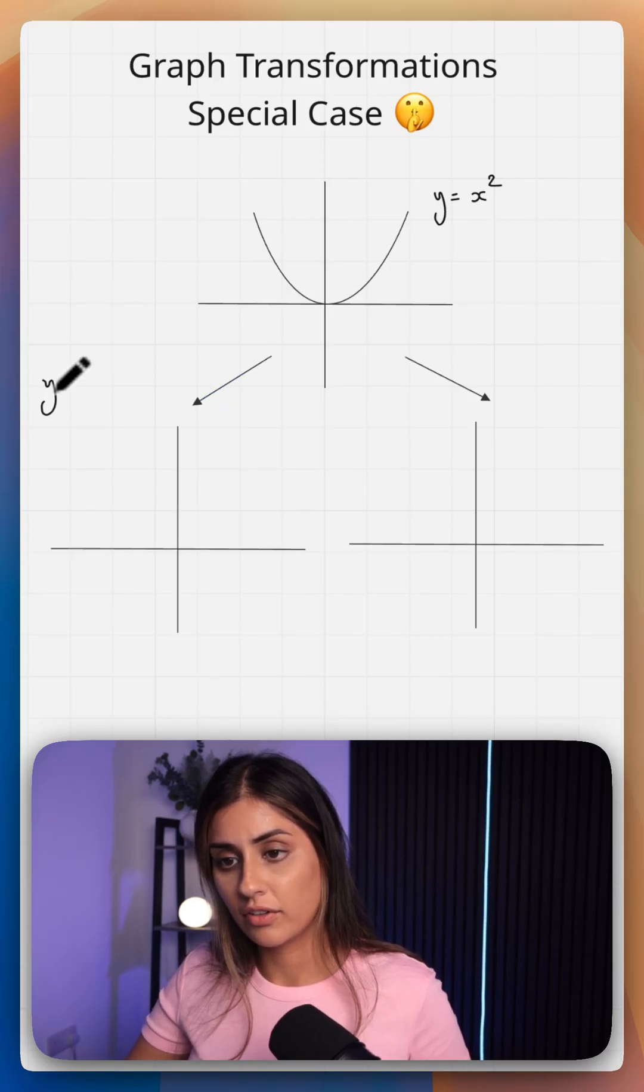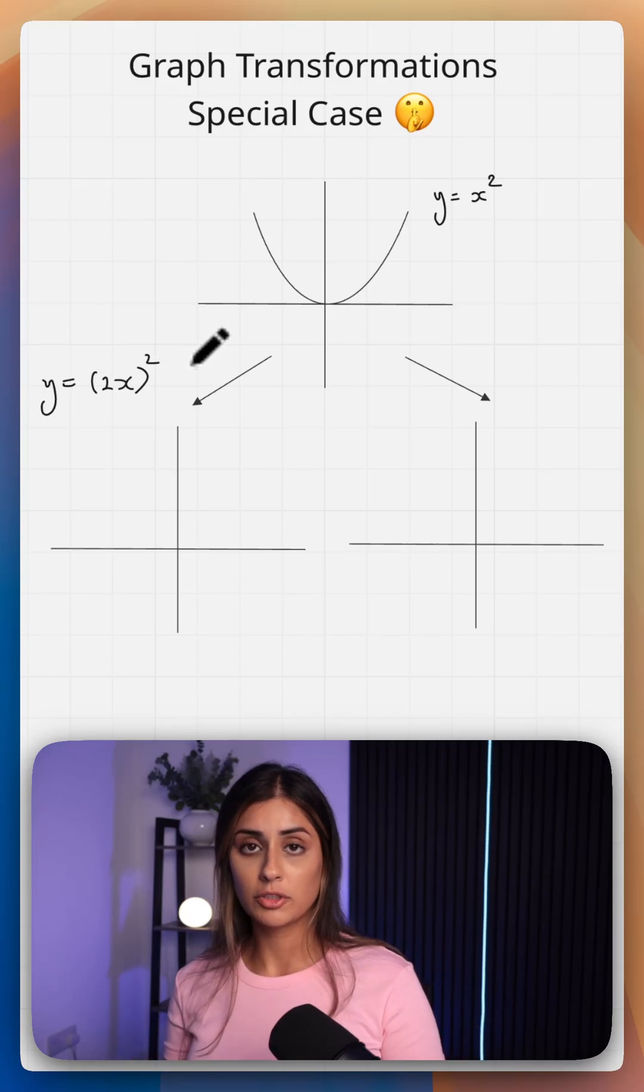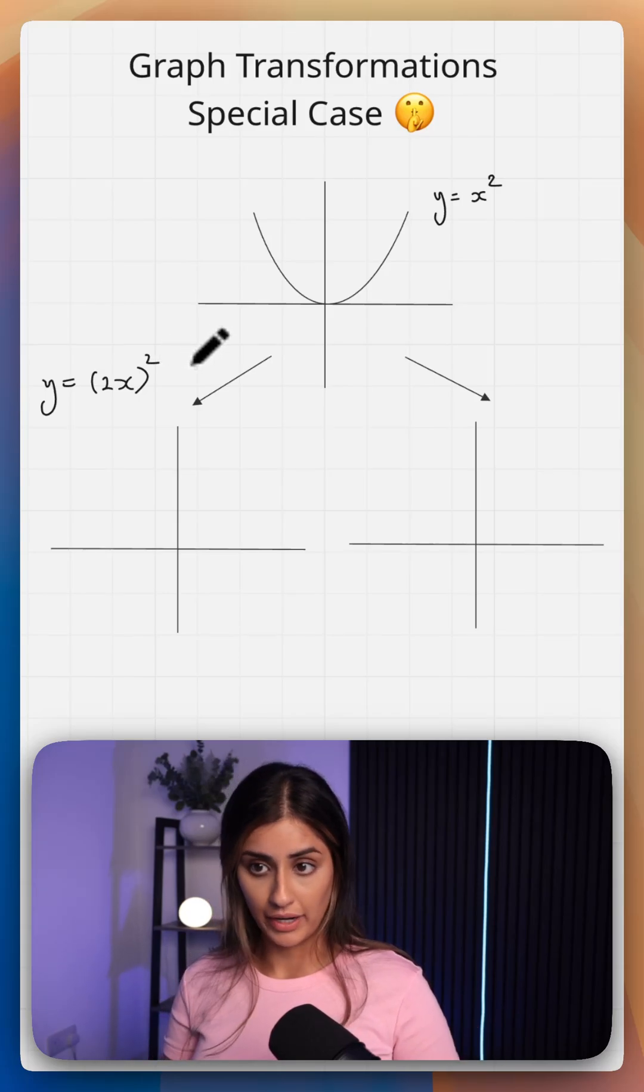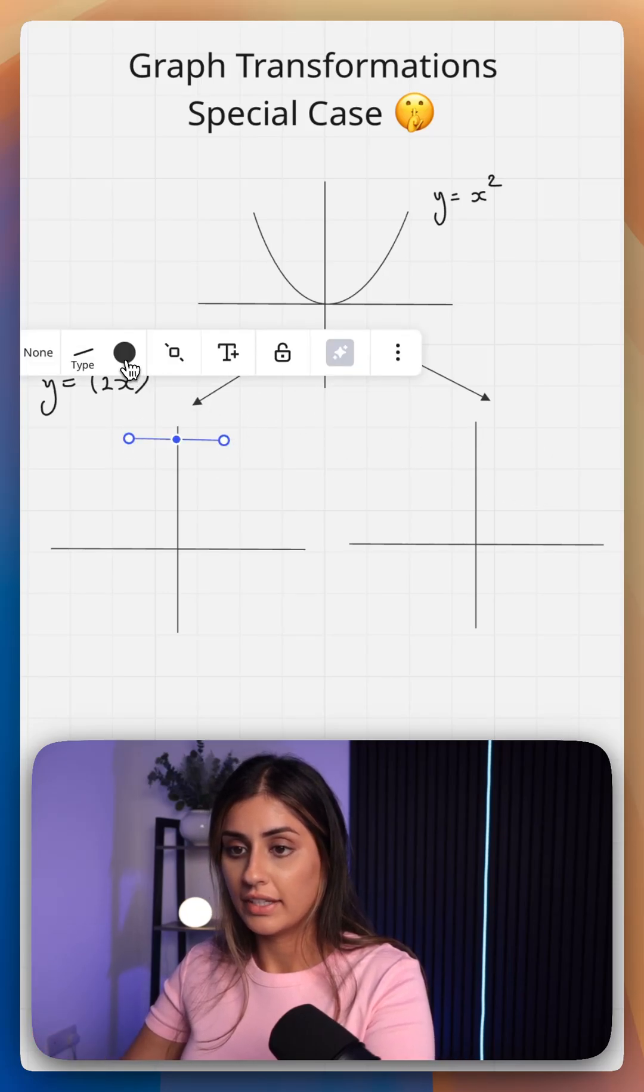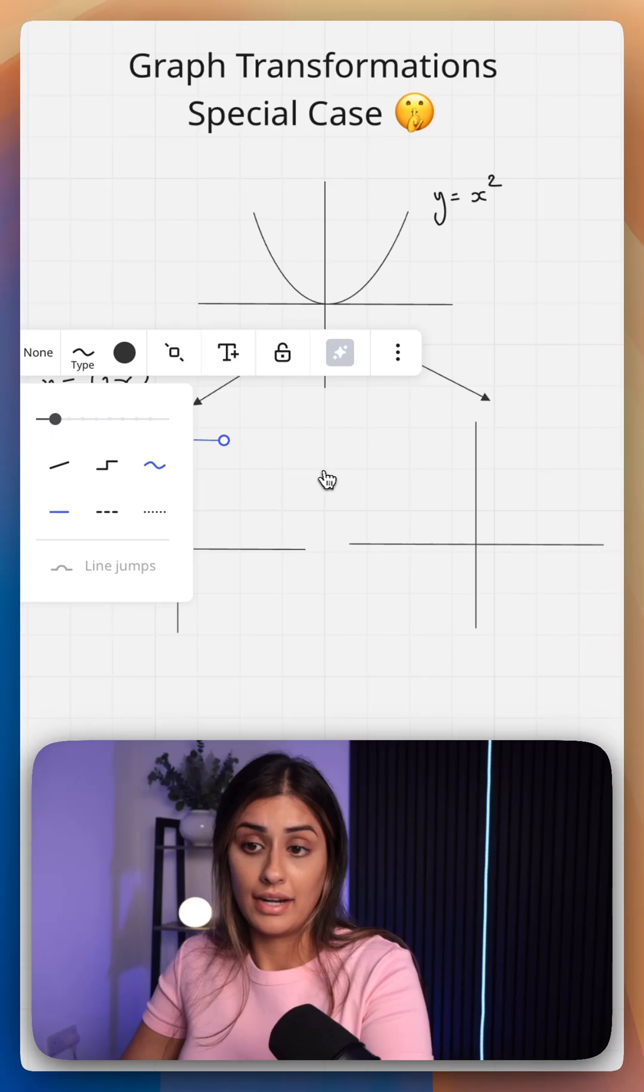Let's look at the graph of y equals 2x squared first. So you're multiplying by 2, and it's inside the bracket, which means instead of stretching by scale factor 2, you're stretching by a scale factor of half, and your graph is going to become a lot more narrow.